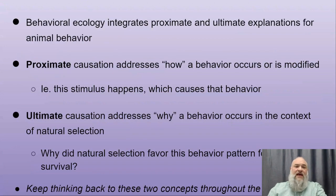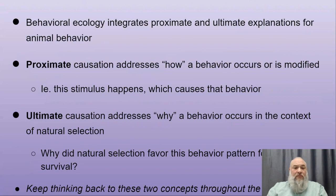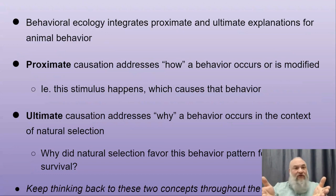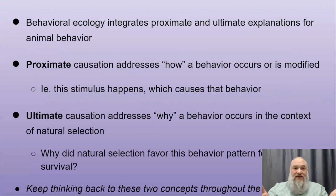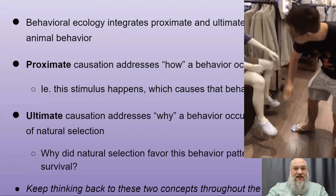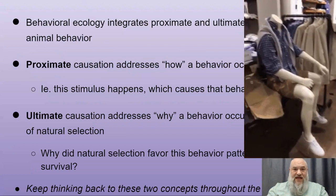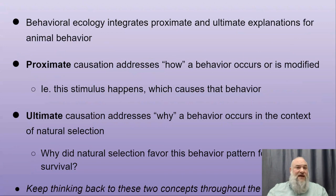There are two areas: proximate cause and ultimate cause. The proximate cause is simply how a behavior occurs or is modified — the stimulus causes the behavior. The simplest form is a reflex: tap on your patellar tendon and your leg kicks out. The stimulus is the tap; the leg bouncing out is the response.